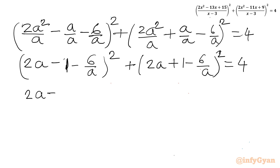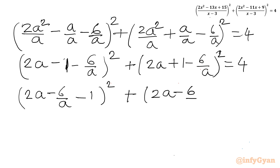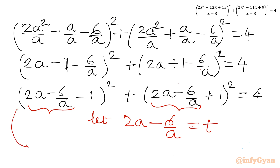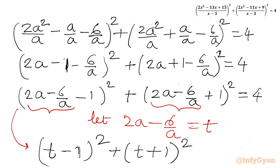I will rearrange as: (2a - 6/a - 1)² + (2a - 6/a + 1)² = 4. Now I will use a substitution which is clearly visible: let 2a - 6/a = t. So our equation converts into variable t: (t - 1)² + (t + 1)² = 4.